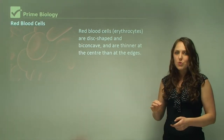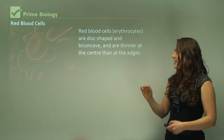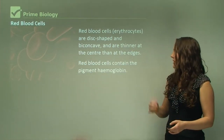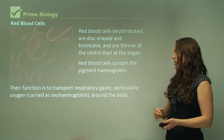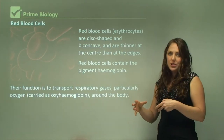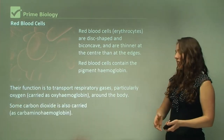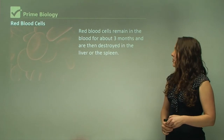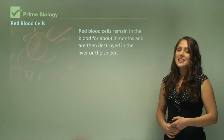Red blood cells are also known as erythrocytes and they're disc-shaped and biconcave — thinner at the center than at the edges, kind of like a doughnut shape but without the hole in the middle. Red blood cells contain the pigment hemoglobin and their function is to transport respiratory gases, particularly oxygen. When hemoglobin carries oxygen it's called oxyhemoglobin; when it carries carbon dioxide it's called carbaminohemoglobin. Red blood cells remain in the blood for about three months and are then destroyed in the liver or the spleen.